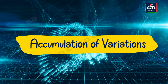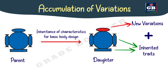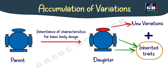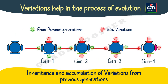Next, let us see the accumulation of variations. Characteristics and traits are inherited from parents to offspring. When this process takes place, new variations also enter the new generation. The new generation always gets traits inherited from parents along with new variations. When this organism reproduces again, it passes both the inherited traits and its own variations to the next generation, which receives these along with further new variations. In this way, from generation to generation, variations get accumulated — this is called accumulation of variations.